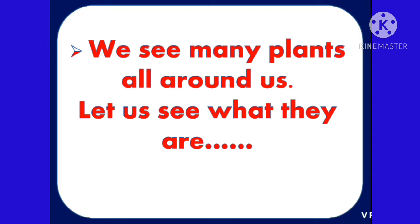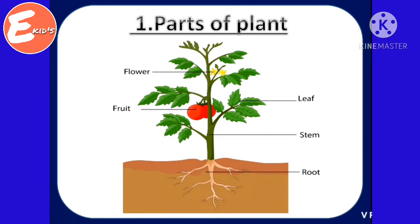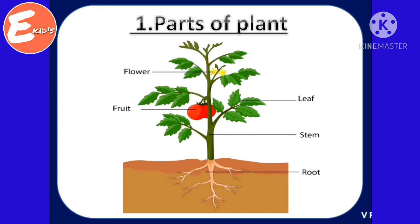We see many plants all around us. Let us see what they are. Parts of plant: root, stem, leaf, flower and fruit.